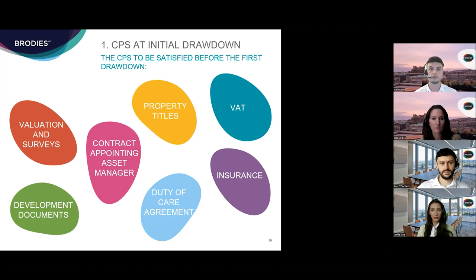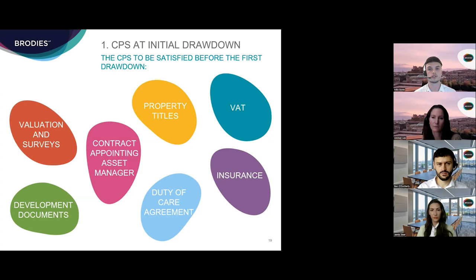Looking more specifically at a real estate development facility loan, the CPs will normally be split into those required at the initial drawdown and those required at subsequent periodic drawdowns. At the initial drawdown, the lender will require most CPs to be satisfied first — these often include a formal valuation of the property based on market value. There are also many other reports and certificates commonly required, such as environmental, coal and archaeological reports, as well as energy performance certificates. Moving to insurance, the borrower's insurance broker will often be required to provide a letter detailing the insurance policies required by the lender.